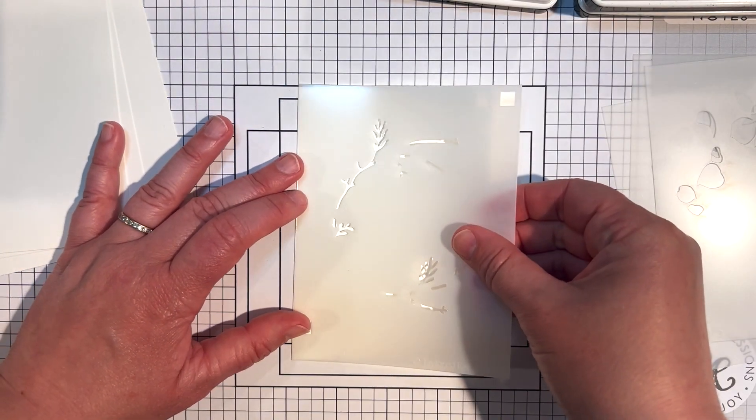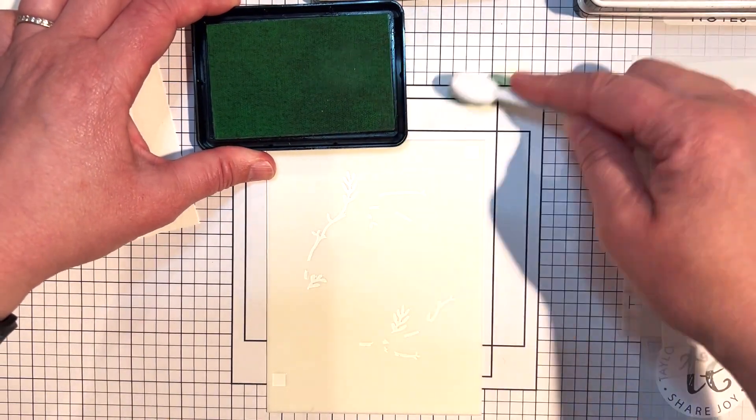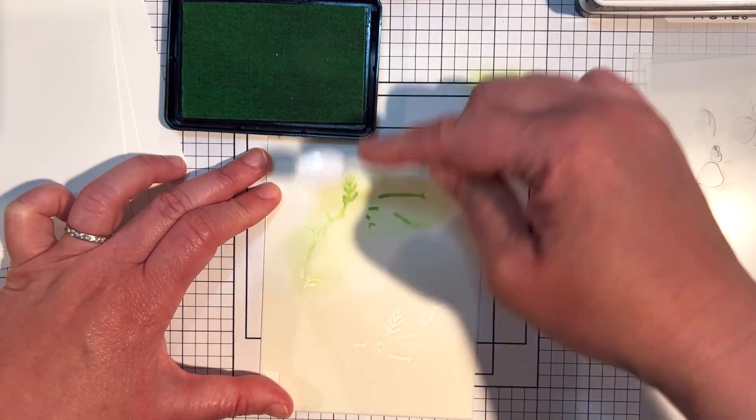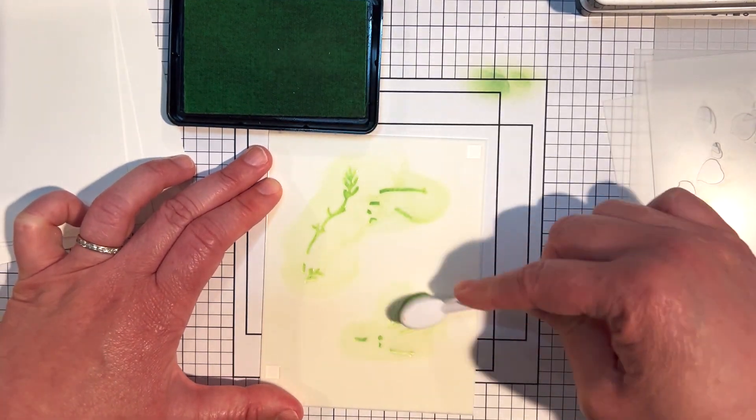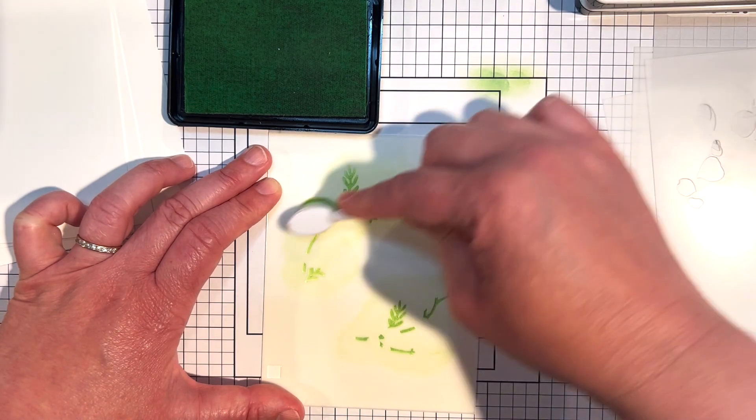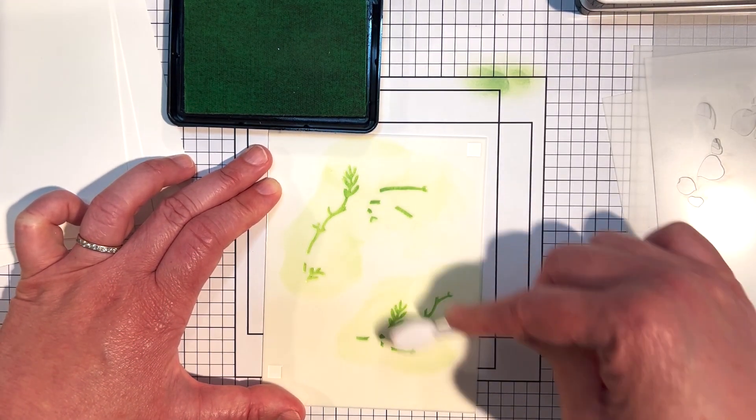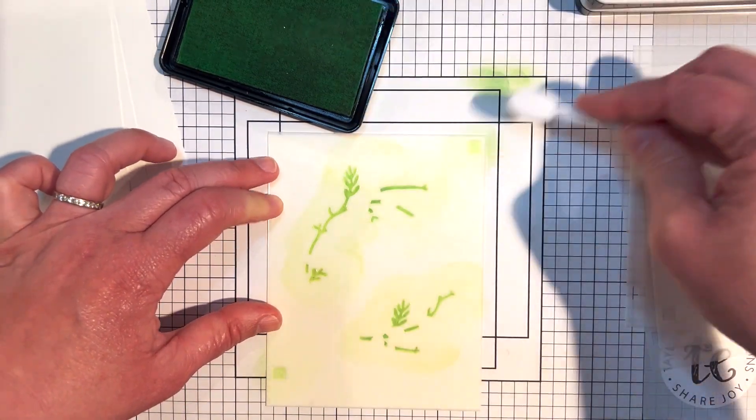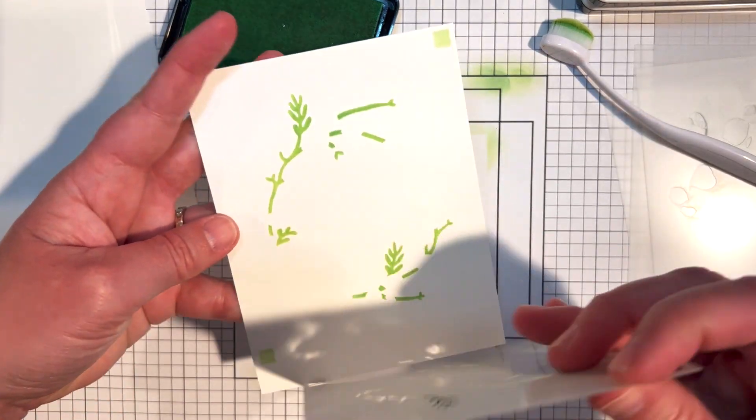I used pixie spray to secure the first stencil down onto an A2 sugar cube card panel, and then I will stencil this using my bitty blender brushes with mint julep ink. There are card alignment squares on the top right corner and bottom left corner, so I made sure to get those with the ink so that it will make lining up the other stencils easier. Once I added all of the color to the stenciled areas, I peeled that stencil back to reveal that first layer.